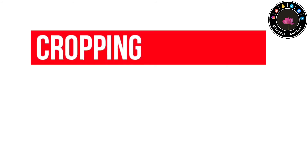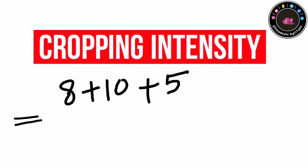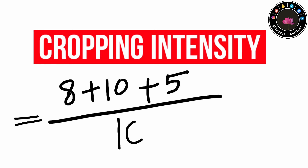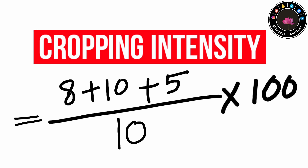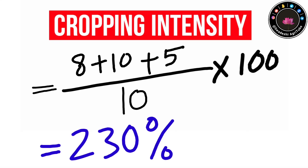So for this farmer, the cropping intensity will be total area of land in one season. As you can see: 8 in pre-Kharif, 10 in Kharif, and 5 in Rabi — divided by total land he has, into 100. If you calculate it, you get 230 percent as the cropping intensity of farmer A.